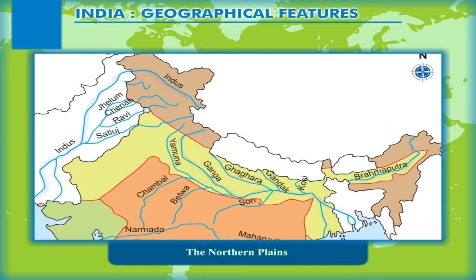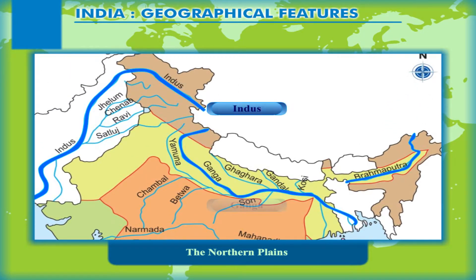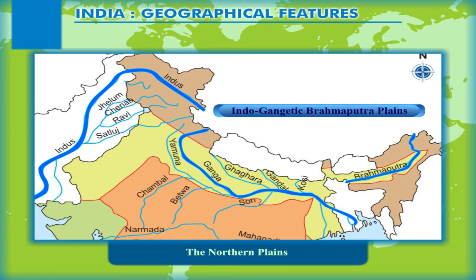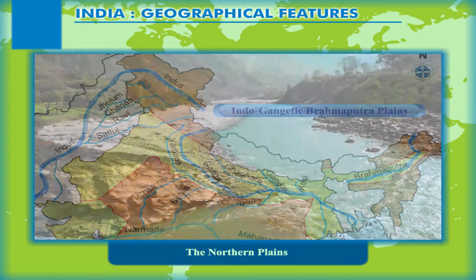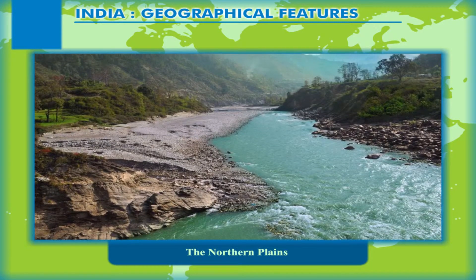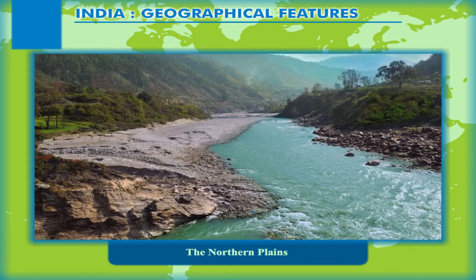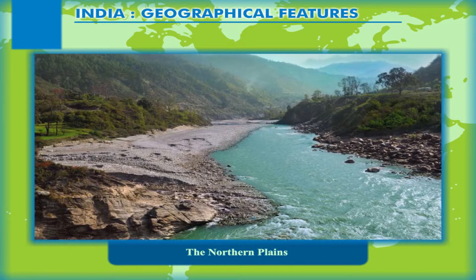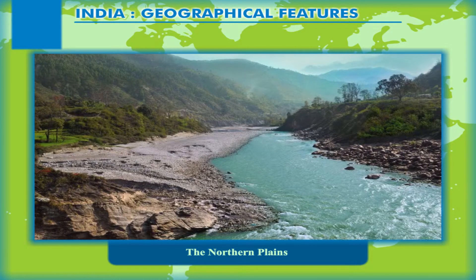Owing to the role played by these three rivers and their tributaries, this region is also known as the Indo-Gangetic Brahmaputra Plains. Depending on significant differences in surface relief, these plains are divided into four divisions.